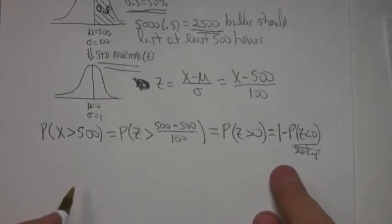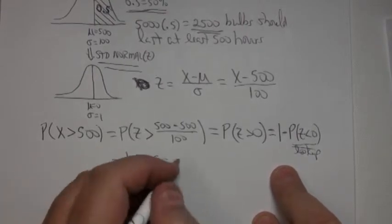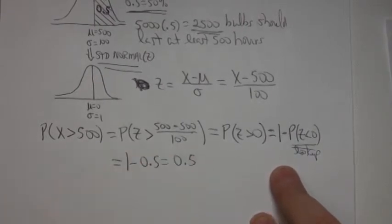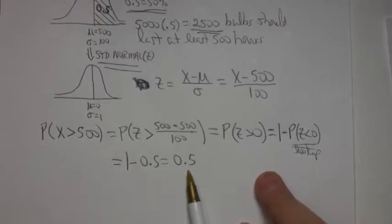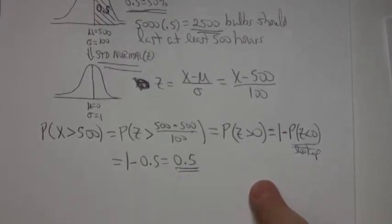So that's 1 minus 0.5, and 1 minus 0.5 is 0.5, and that gets us to the same spot we had earlier, which is that the probability that a value is greater than 500 is 0.5. That means that you expect half the bulbs to last that long.